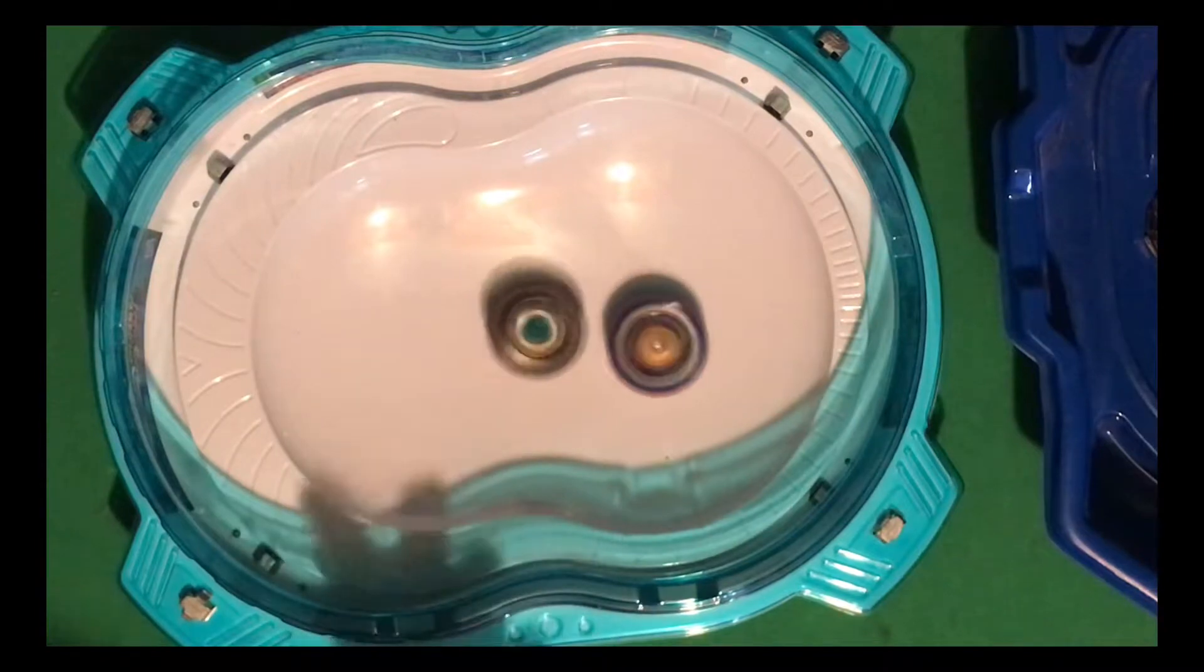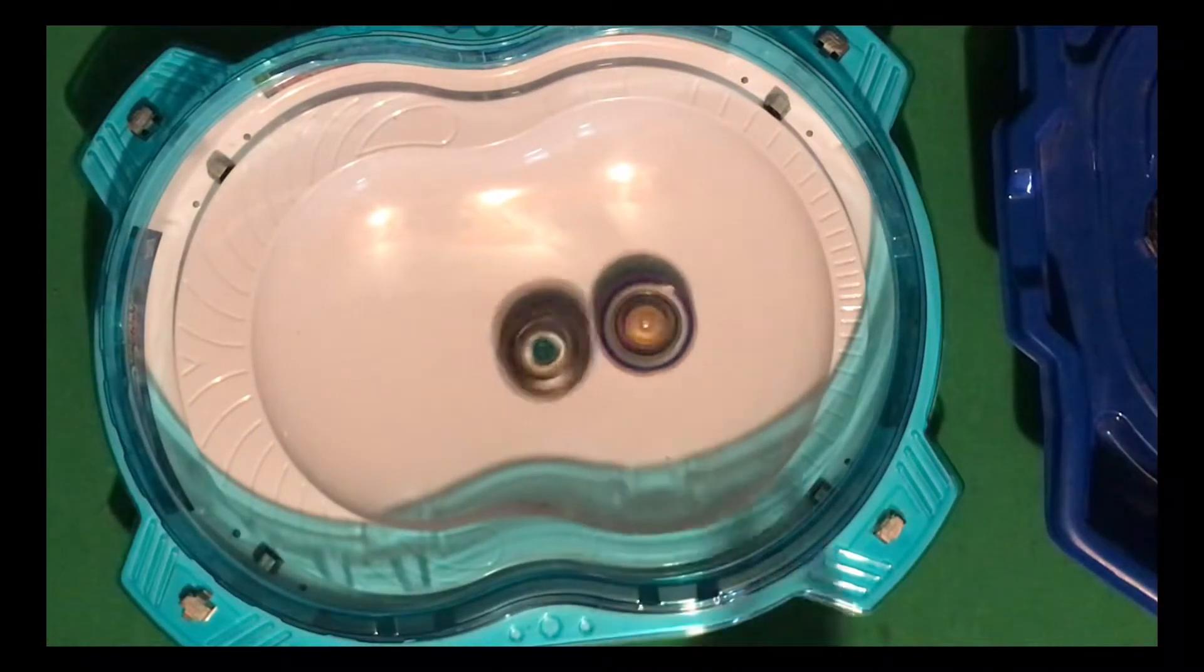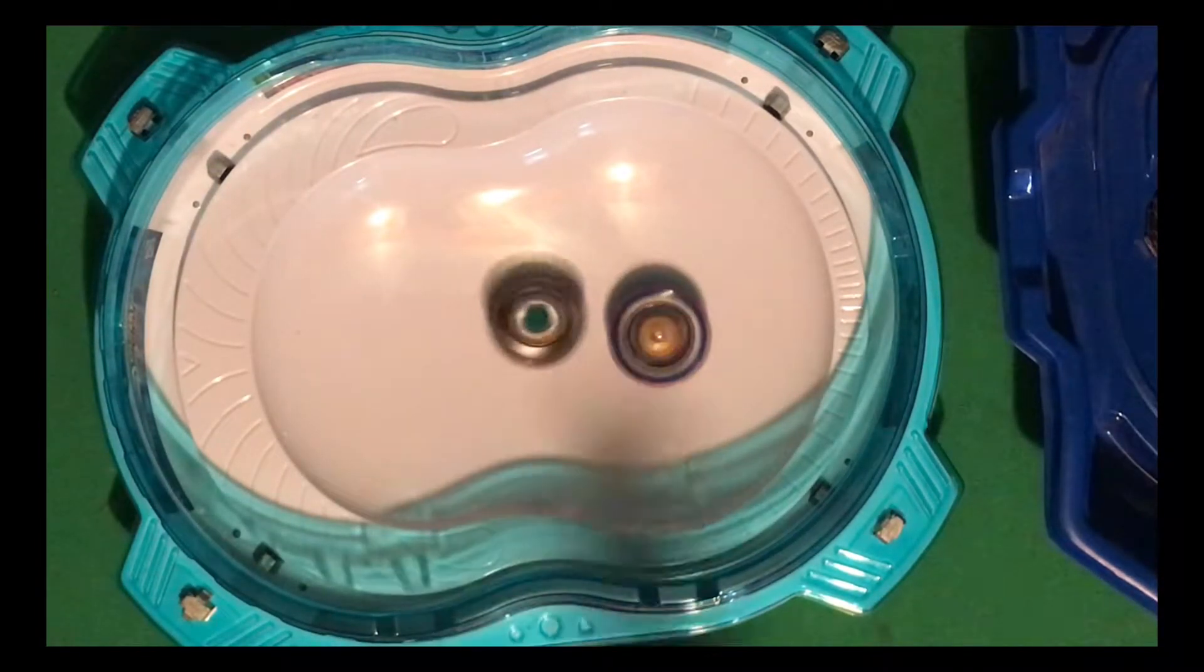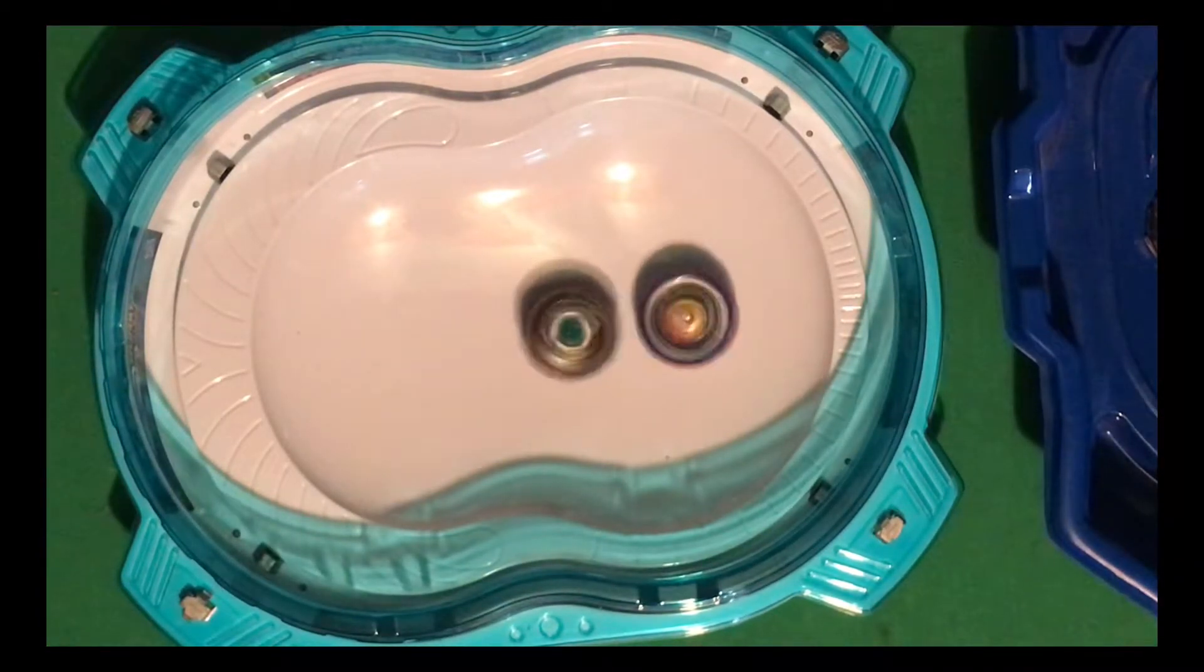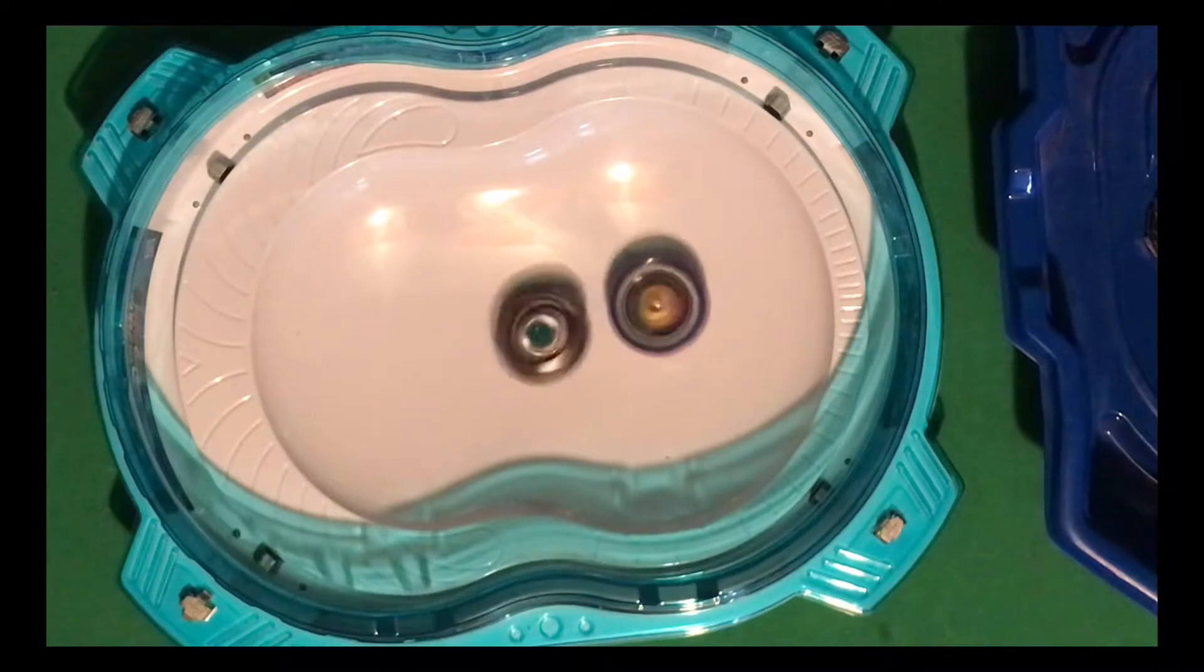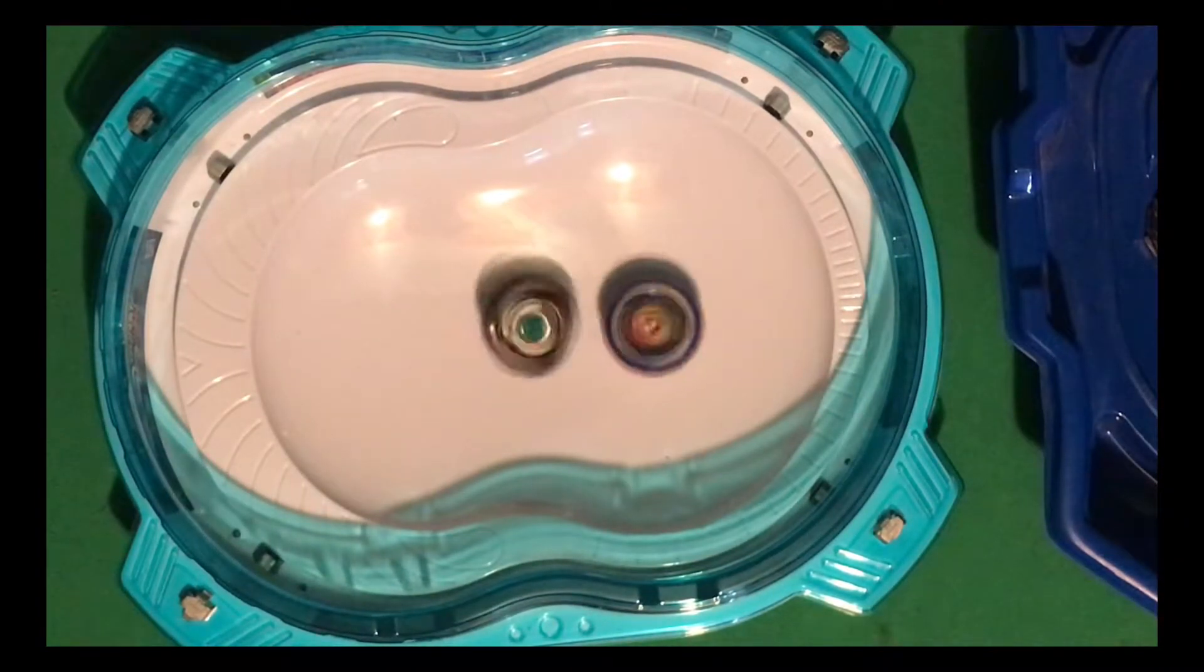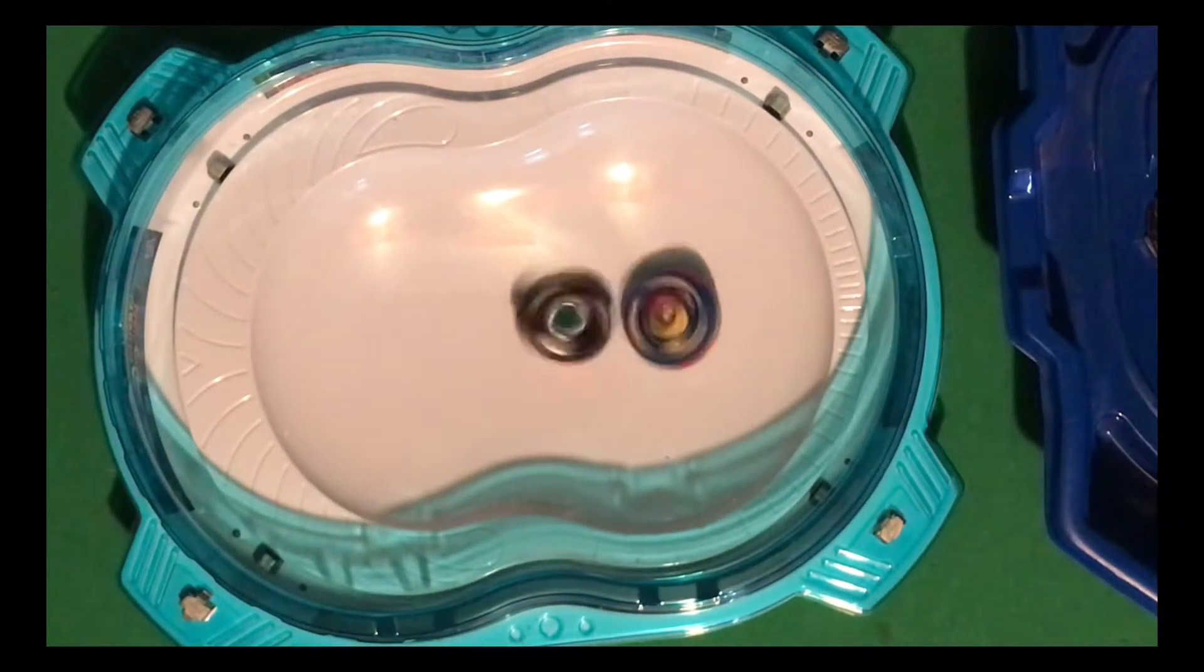When one Bey stops spinning before the other, that's one point to the Bey that kept going. If a Bey bursts, then that's two points to the one that bursted it. And ties result in nothing because ties are actually more common than you'd expect.